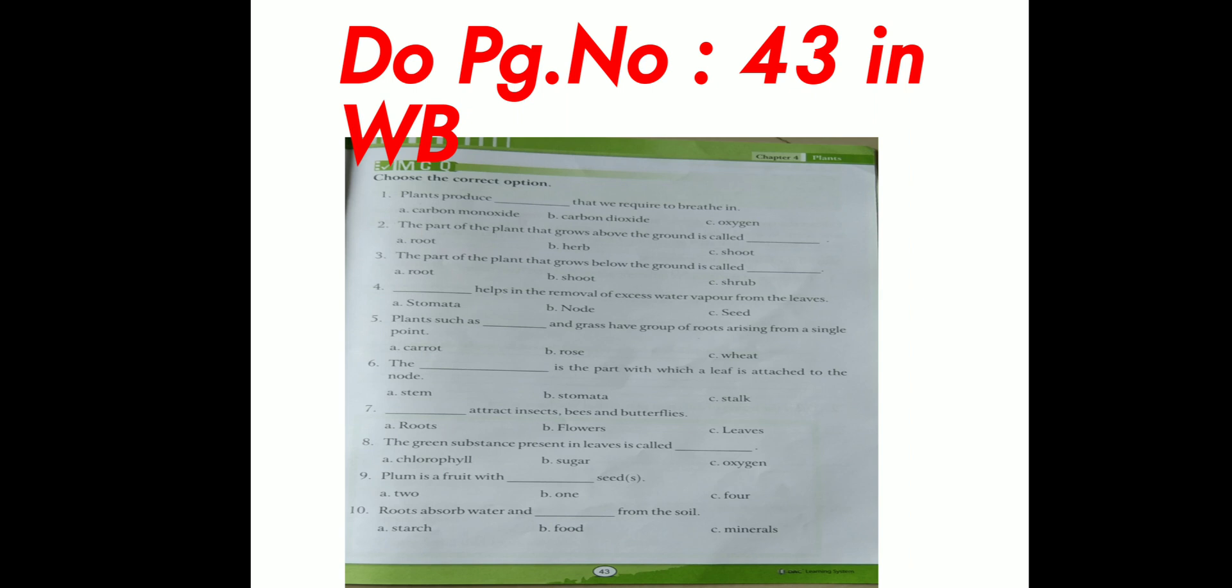Eighth question. The green substance present in leaves is called dash. Option A, chlorophyll. B is sugar. C is oxygen. Next question. Plum is a fruit with dash seeds. A is two. B is one. C is four.